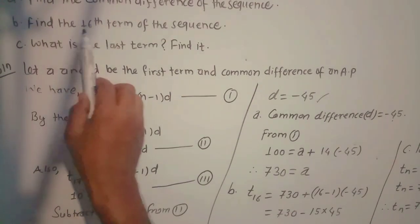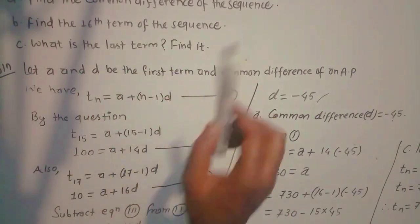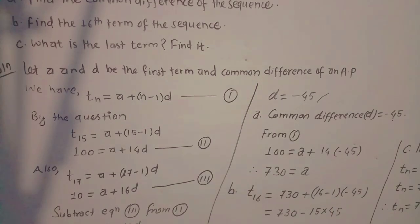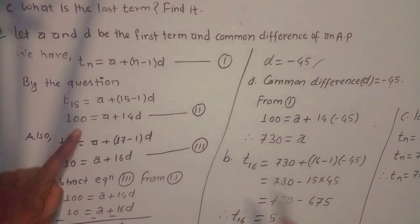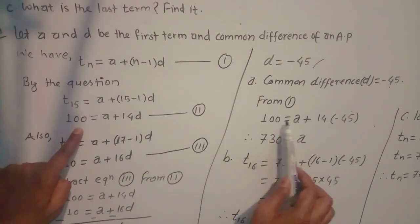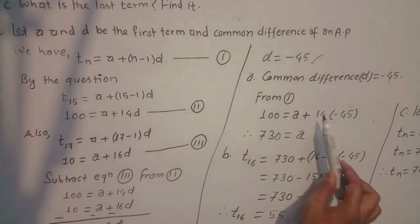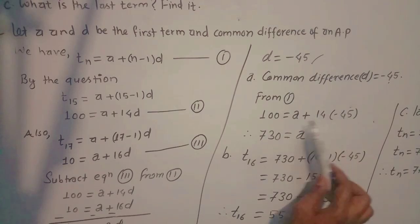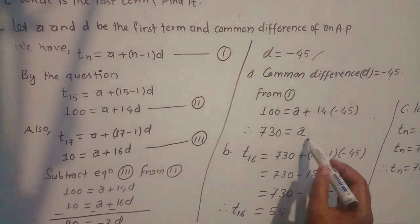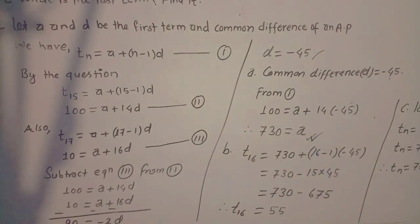Now find the 16th term. First we need the first term a. Put d ko value in equation 2: 100 equals to a plus 14 times minus 45. 14 times minus 45 gives minus 630. So a equals to 100 plus 630 equals to 730. This is the arithmetic progression ko first term.